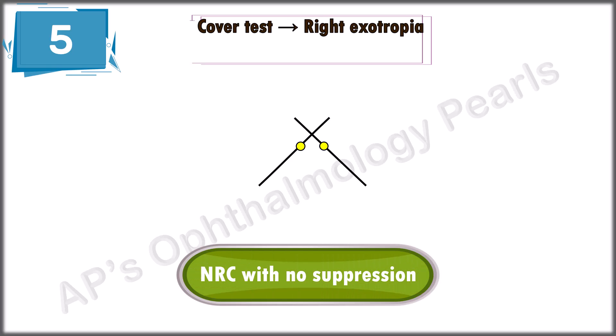Scenario 5. This is what the patient sees. Here again, there are two lights, so diplopia is present. Again, this means there is a deviation and no suppression. Here, the light seen on the right belongs to the left eye, so the diplopia is crossed. So, the cover test will show an exotropia. So, this is a right exotropia with normal retinal correspondence and absence of suppression.